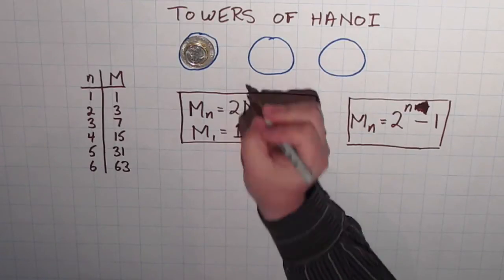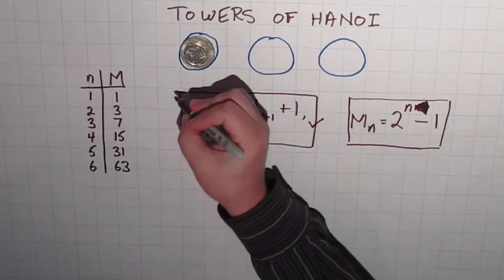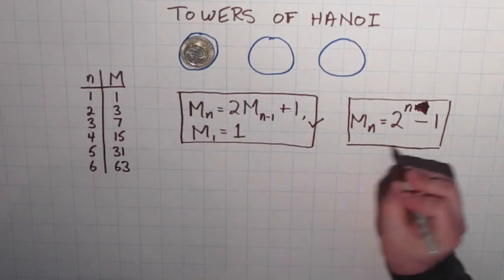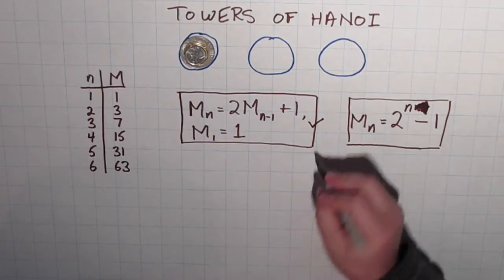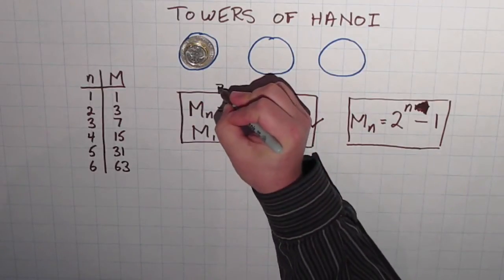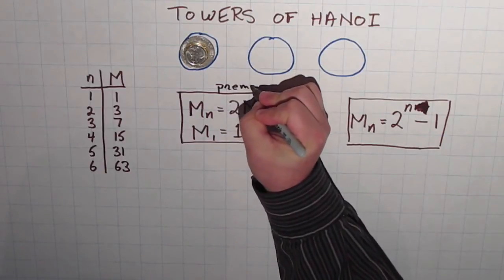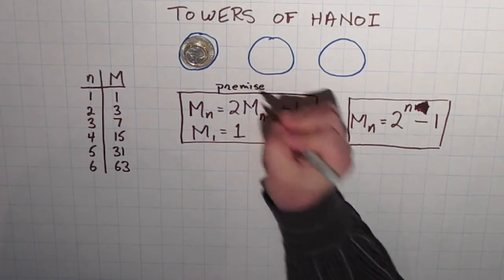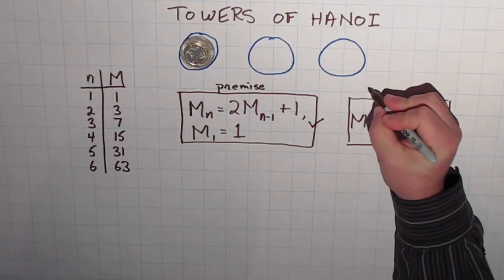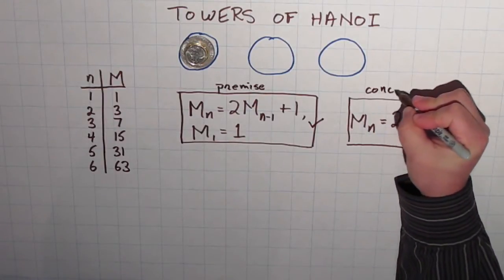A little bit of terminology. When we make these types of statements, what we're saying is, if this is true, then this is true. That's the kind of statement I want to prove to be true. And this part that we know to be true, the beginning part of our statement, we call the premise. And this piece of it, we call the conclusion.